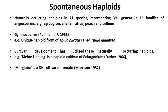Gymnosperms: unique haploid from Thuja plicata. Cultivar development has utilized these naturally occurring haploids, for example: Kleinia laboring is a haploid cultivar of Pelargonium zonale. Merglobe is a double haploid cultivar of tomato. All these have spontaneous haploid origins.